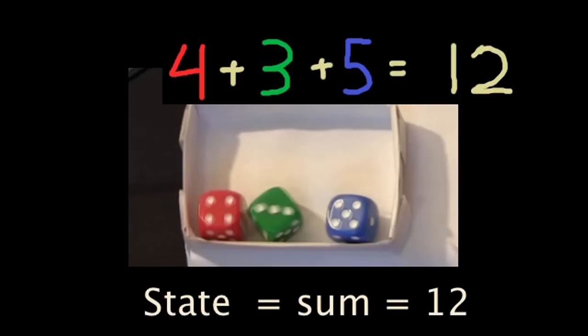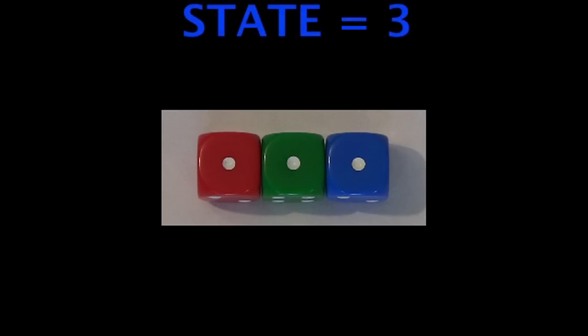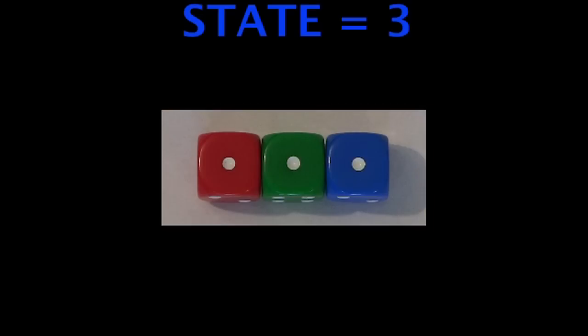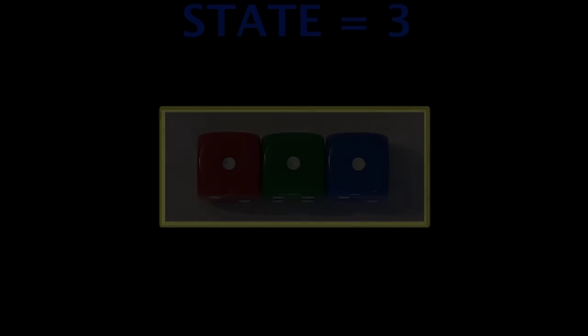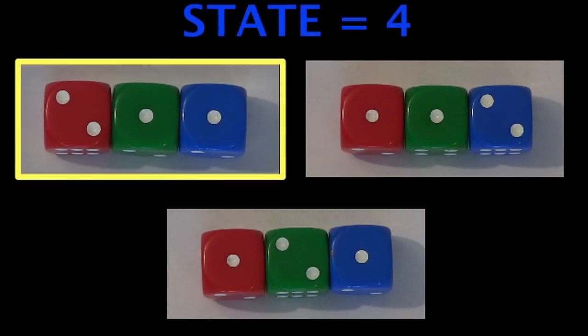For example, if the three dice all show 1, then the state is 3. Note that there is only one way to obtain the state—all dice must be showing 1. By comparison, there are three possibilities to get into state 4. This state has less order than state 3 because the dice could be in any of these combinations and the state will still be 4.